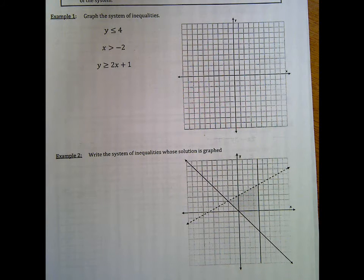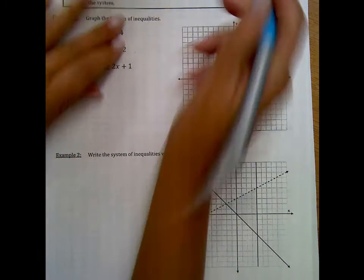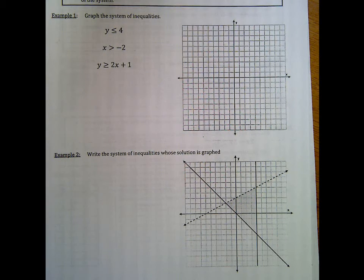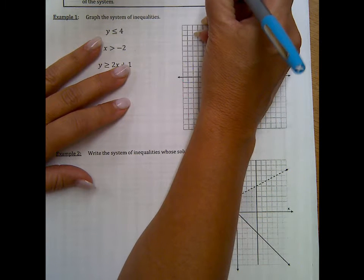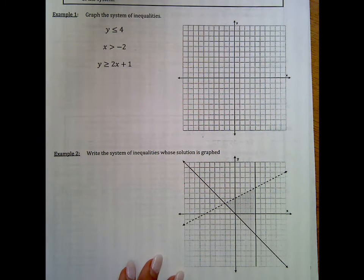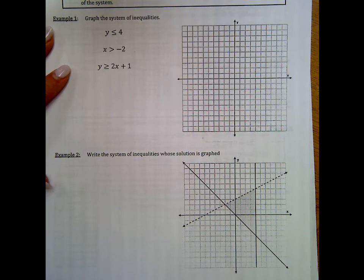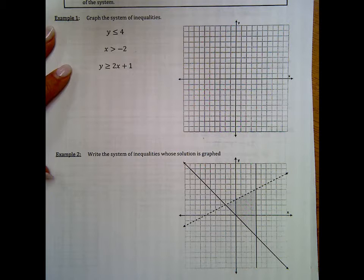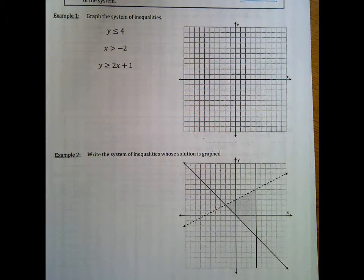Hello, we're doing AAT notes. This is section 1.7. We're graphing systems of linear inequalities, and when you see that you're graphing inequalities, that means you're going to shade in some way. We've already graphed inequalities where we shaded the area. Here we're graphing multiple inequalities, and we've got to shade the areas they have in common — their intersection. When graphing systems of inequality, shade only the region that is true for all parts of the system.